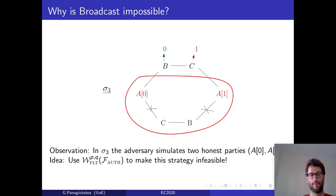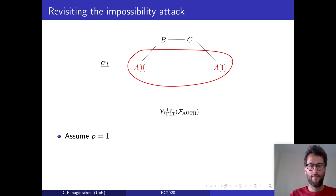Now, observe that in the third scenario, the adversary simulates two honest parties, A broadcasting 0 and A broadcasting 1. Our idea is to use the filtered network functionality to make this strategy infeasible, by making simulating parties costly.